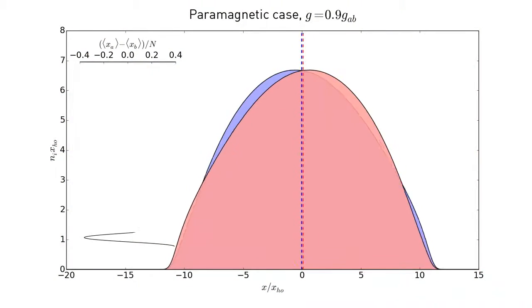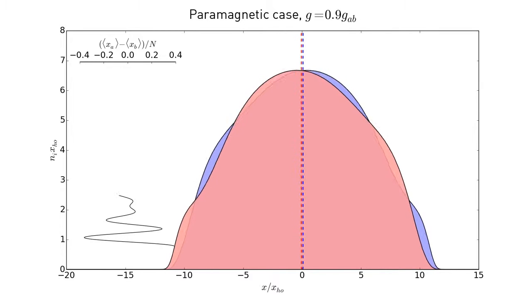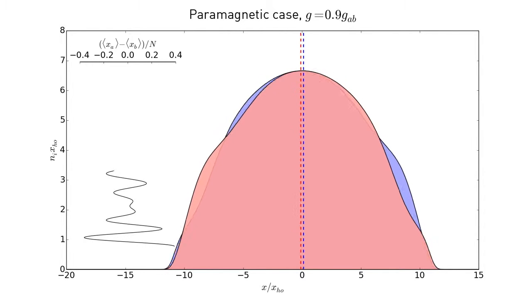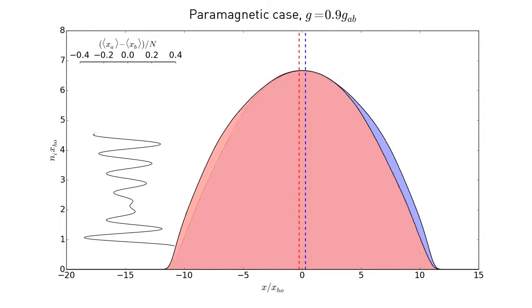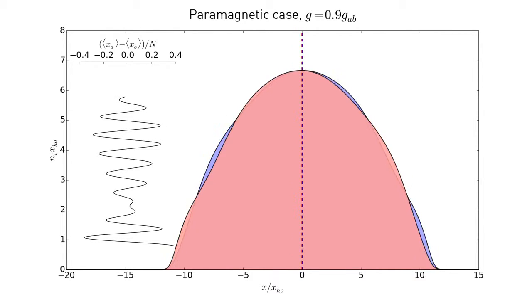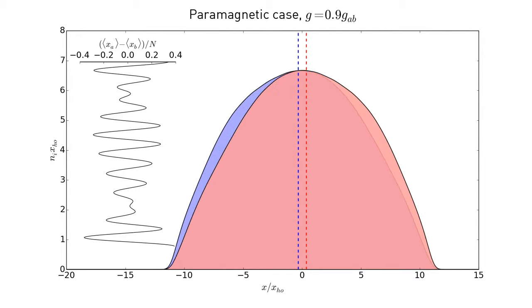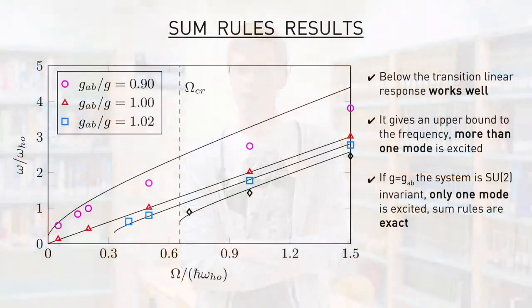As we show in our work, this dynamics is very different depending on whether the system is initially in the paramagnetic or ferromagnetic regime. In the paramagnetic phase, its response is linear, and the dynamics corresponds to oscillation of the relative center of mass of the two clouds, which gives rise also to excitation of other modes. The lowest frequency is well described by a sum-rule approach, but this approach gives only an upper bound to the frequency, and it becomes exact only when there is only a single mode excited in the system.